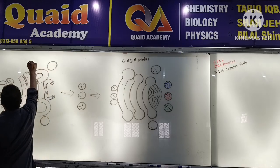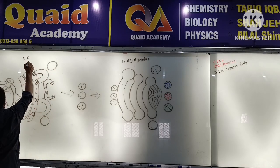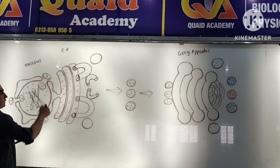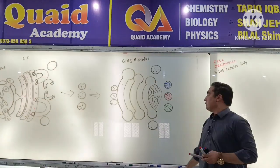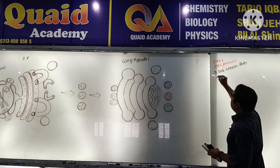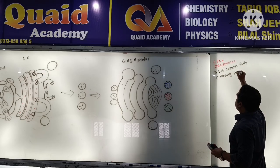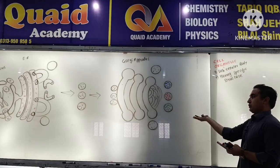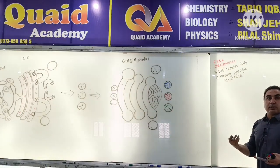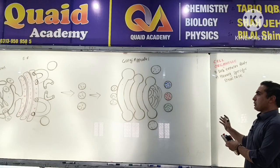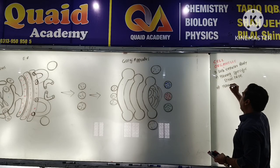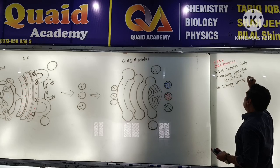The endoplasmic reticulum structure was connected to the nucleus. Point number two: having a specific structure. Point number three: having a specific function — the function of the cell is a special function.